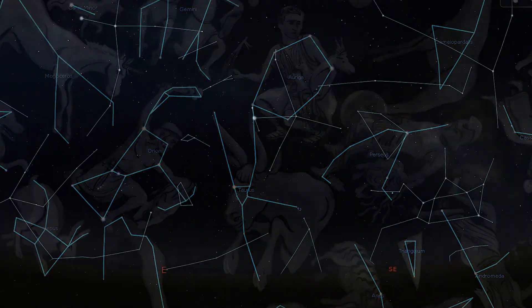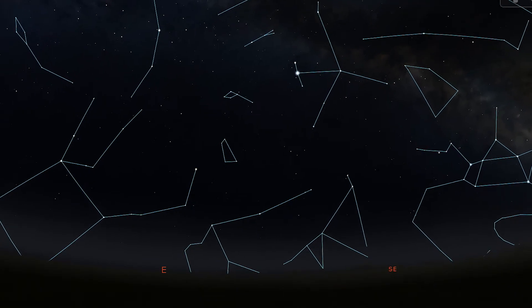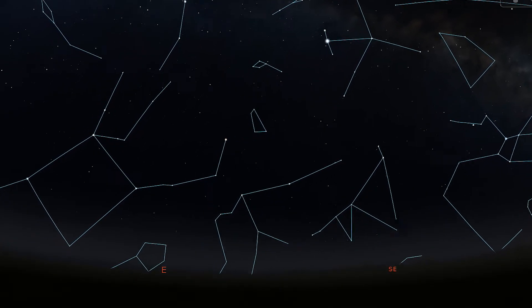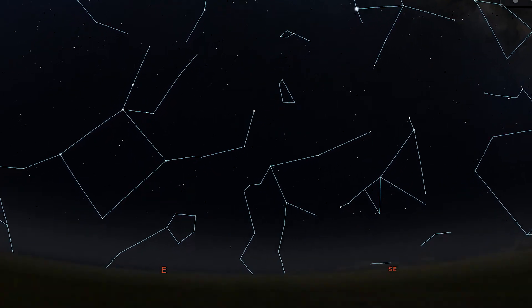As the Earth rotates, constellations constantly move across the night sky. So if you get up early or stay up late, you can see stars that you wouldn't otherwise see.